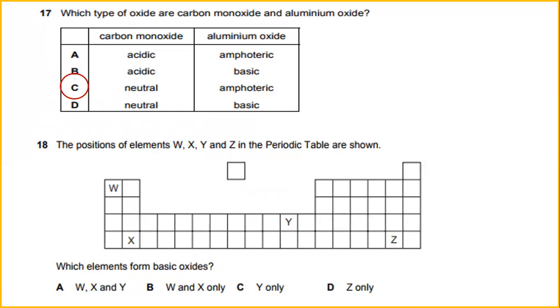The position of elements W, X, Y, and Z in the periodic table are shown. W represents hydrogen, alkaline metal. X is radium, alkaline earth metal. Y is copper, a transition metal. And Z is a non-metal property. Which elements form basic oxide? So the answer will be A, which is hydrogen, radium, and copper.